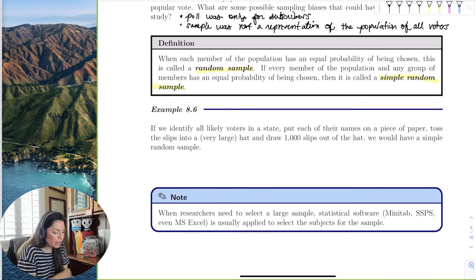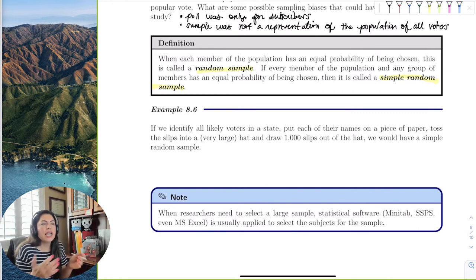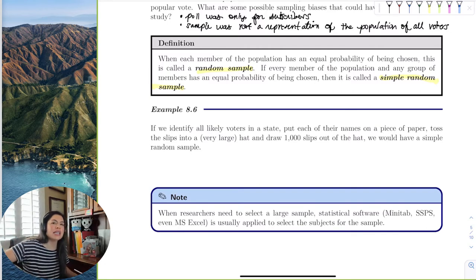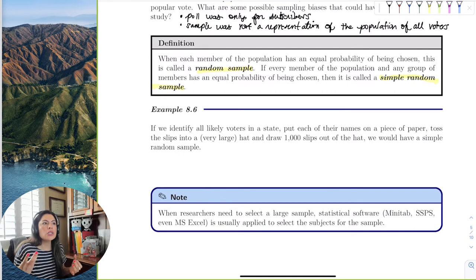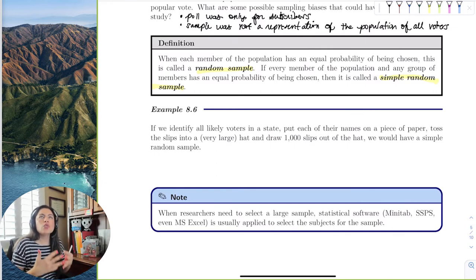So if we identify all likely voters in a state, put each name on a piece of paper and toss it into a very large hat and draw 1,000 slips out of the hat, that's a random sample. It's literally blind selecting people. Now, essentially, when you're doing voters, there are millions, as we saw, like in the last election, there was like about 150 million voters. That is way too much to put in a hat and randomly select.